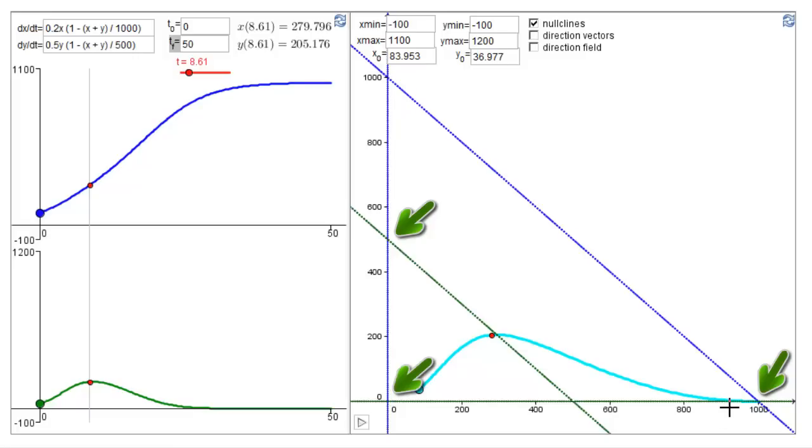In this case, the equilibrium (1000,0) is the stable equilibrium where the solution goes. And species A wins, going to its carrying capacity of 1000, and B going to zero.